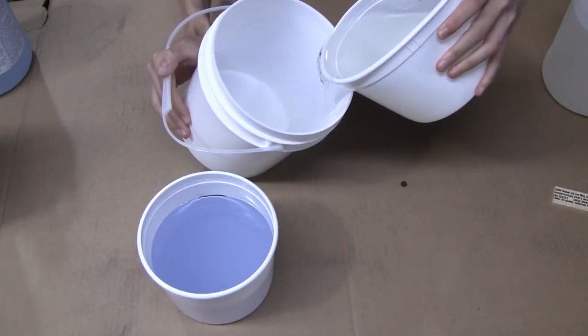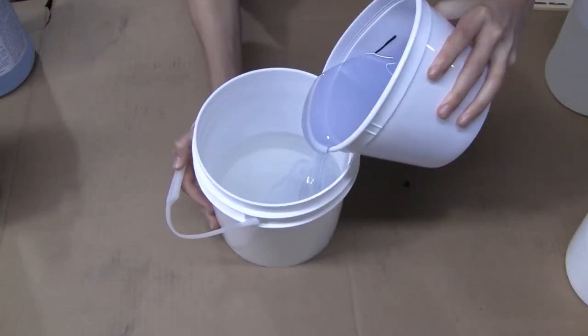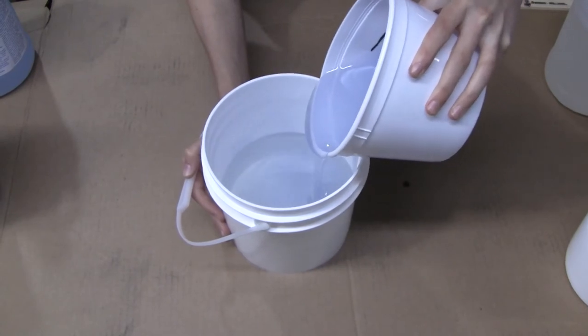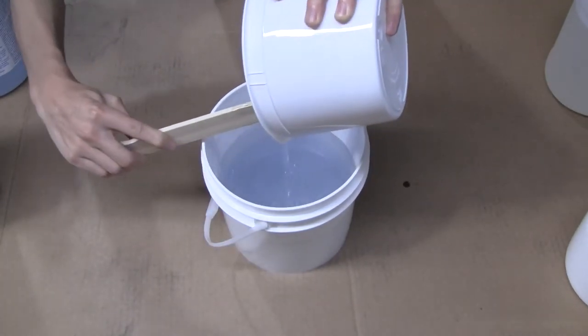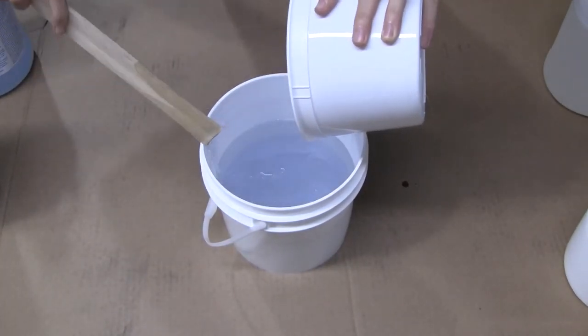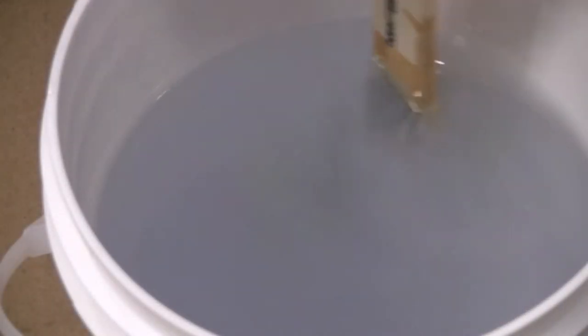Simply measure out each side A and B, combine into a mixing container, and gently stir until all the striations have disappeared. It's important to stir slowly so that you don't incorporate any air bubbles into the resin.